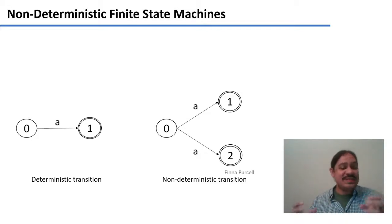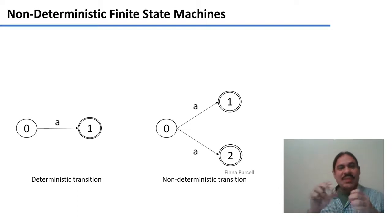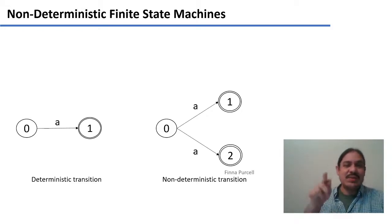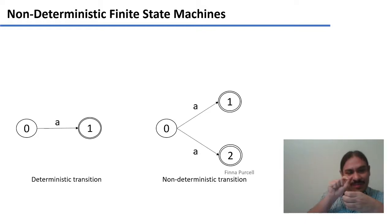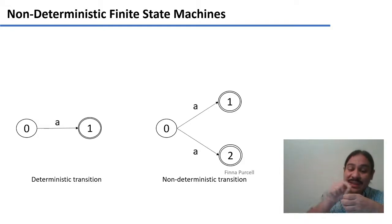A finite state machine is an abstraction that has states, transitions in between states, and inputs that trigger transitions between states. Many of the transitions we've been seeing so far are deterministic, like the one on the left. Here we have an automaton with two states, zero and one. If you're standing at zero and you get the input A, there's only one thing that can happen — you go from zero to one. Because the input A completely determines where you go, this is called a deterministic transition.